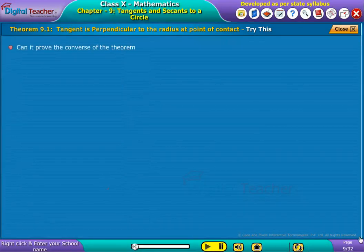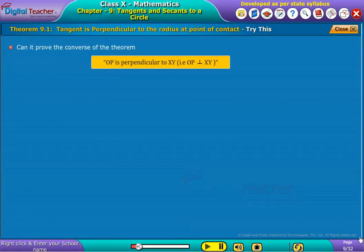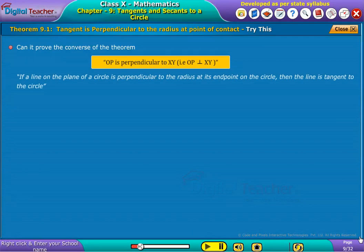Can we prove the converse of the theorem? If OP is perpendicular to XY, if a line on the plane of a circle is perpendicular to the radius at its end point on the circle, then the line is tangent to the circle.